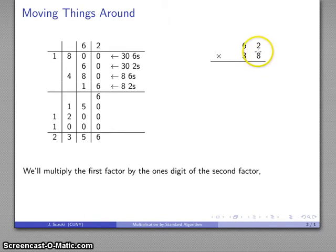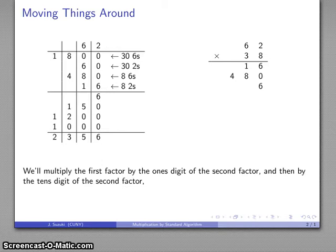So that's 8 times 2 gives me 16. That's 8 times 6. Well, that's actually 8 times 60 gives me 480. And then I multiply the tens digit by the first factor here. So that's 3 times 2 is 6. Wait a minute.